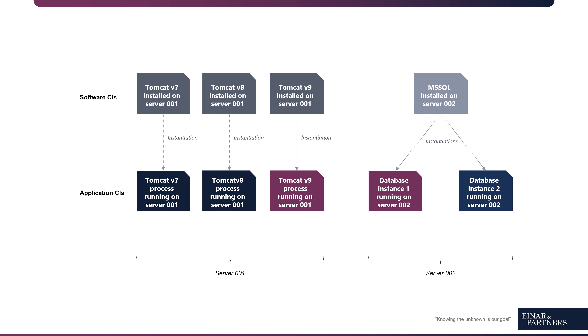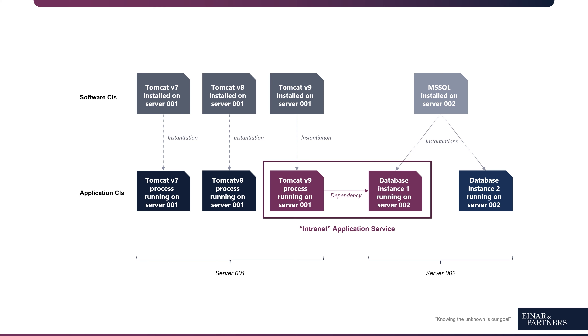Application CIs are the instance of a software that is running on a device — occupying memory space — and it is part of an application. So that is where we use application services to take the software components together with the hardware components where they are running on, and then map them into our application service. We can do this automatically — and you guessed it — with service mapping.